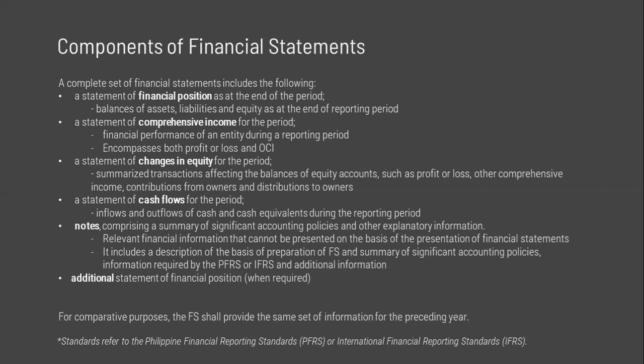The profit or loss section presents the following line items for the period: revenue including separate interest revenue, finance costs, gains and losses arising from the recognition of financial assets measured at amortized cost, impairment losses and impairment gains of financial assets, gains and losses on reclassification of financial assets from amortized cost or fair value through OCI to fair value through profit or loss, share in profit or loss of associates and joint ventures, tax expense, and results of discontinued operations.